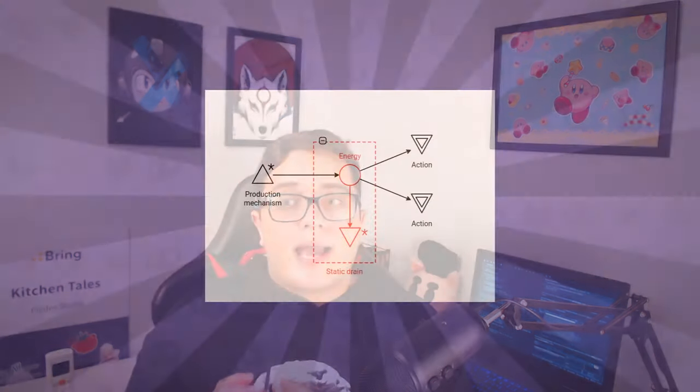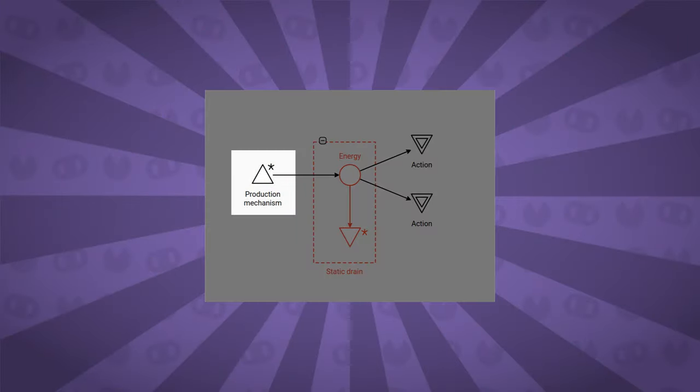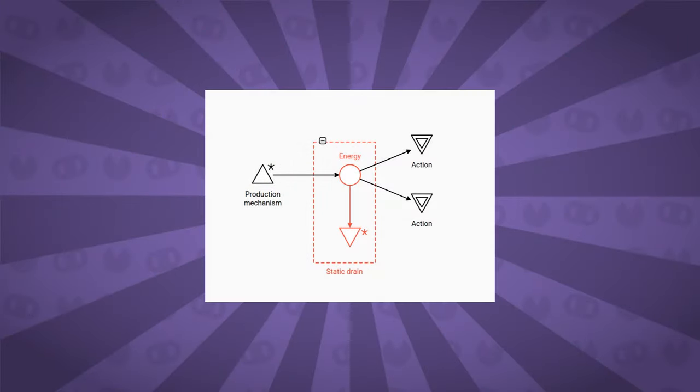A friction is a mechanism that drains resources from the system or from the economy. It is different from a simple steady drain mechanism, because players must be able to invest some resources or develop some strategy or skill to overcome this friction. We usually apply the friction pattern when we want to counter a production mechanism, to prevent some game-breaking strategy. That's why in the friction pattern we have the output of a production mechanism on one side, and then we apply the friction pattern on the output of this mechanism.